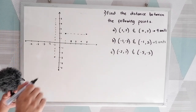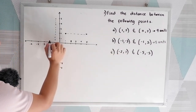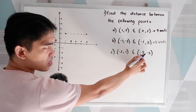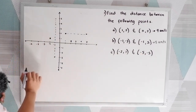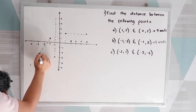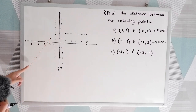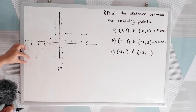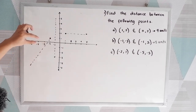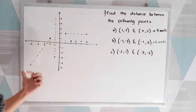Now for our last problem: (-2, 1) and (-5, -5). Negative 2, 1 is our first point, and negative 5, negative 5 is the second point. Connecting the two points, notice that our line is in a slanting form. So we cannot count — we cannot assume that we can get the same calibration or unit. So how are we going to find the distance between two points?